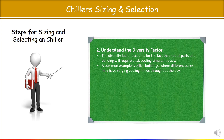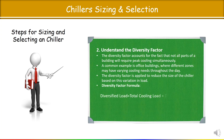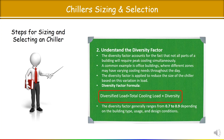A common example is an office building where different zones may have varying cooling needs throughout the day. The diversity factor is applied to reduce the size of the chiller based on this variation in load. The formula is: Diversified Load = Total Cooling Load × Diversity Factor. The diversity factor generally ranges from 0.7 to 0.9 depending on the building type, usage, and design conditions.